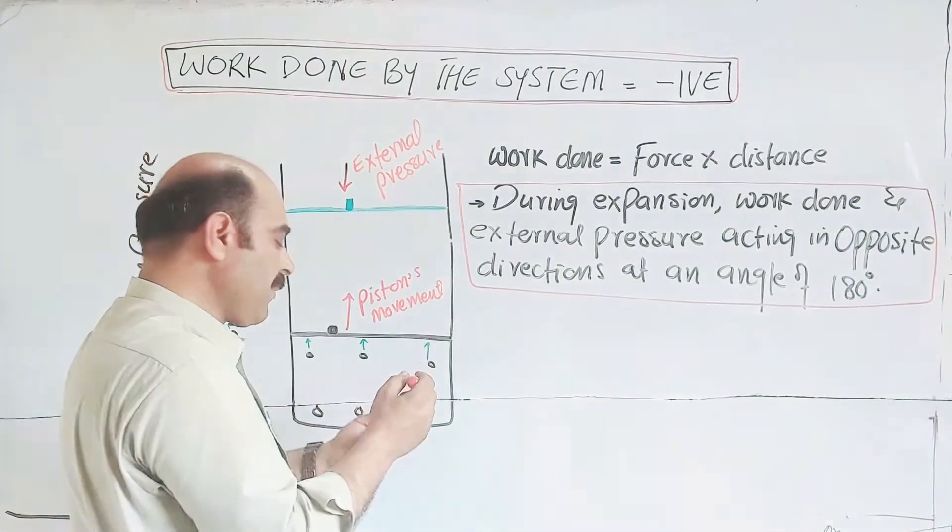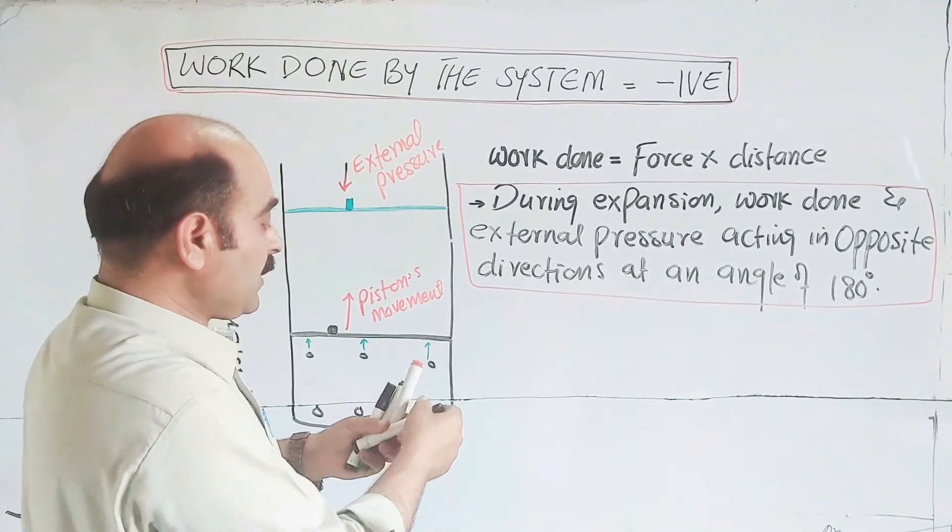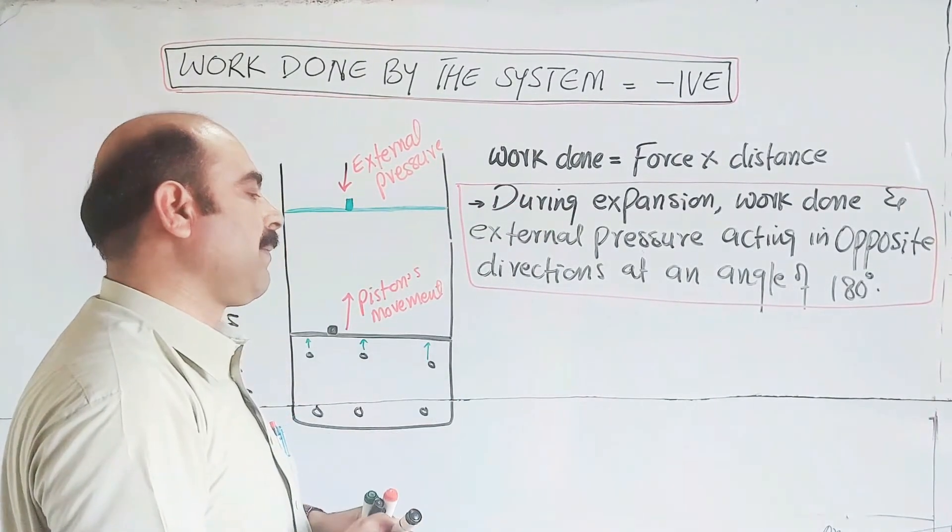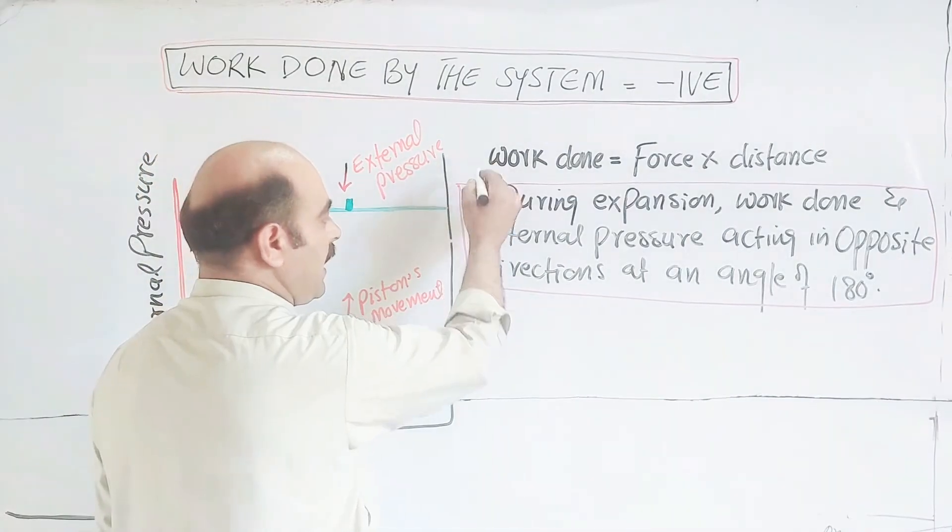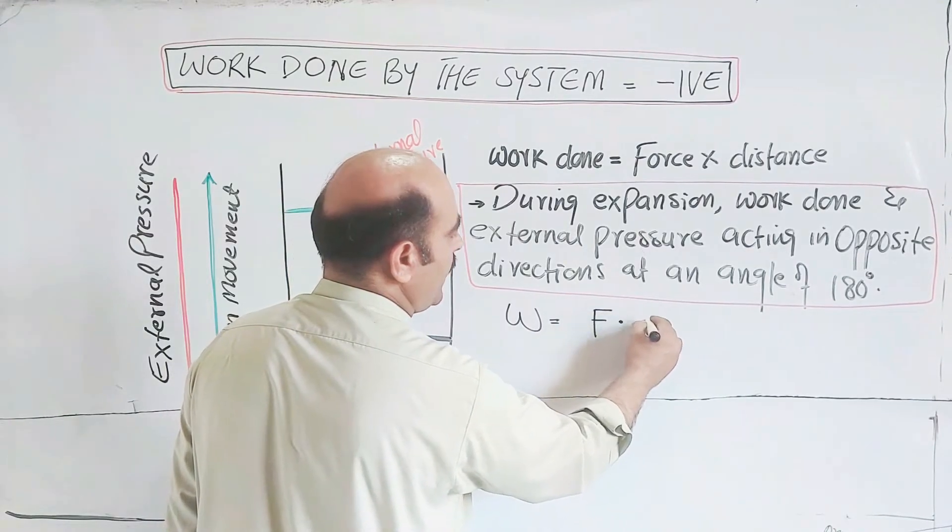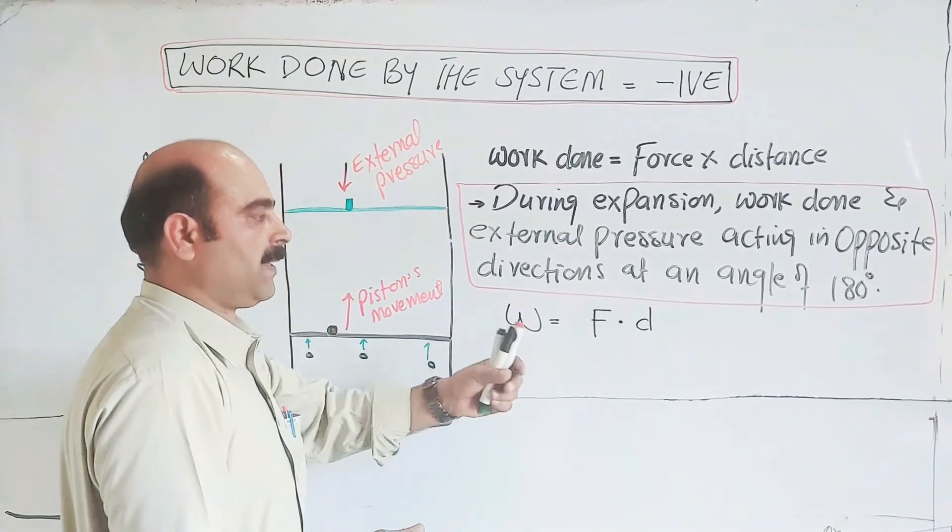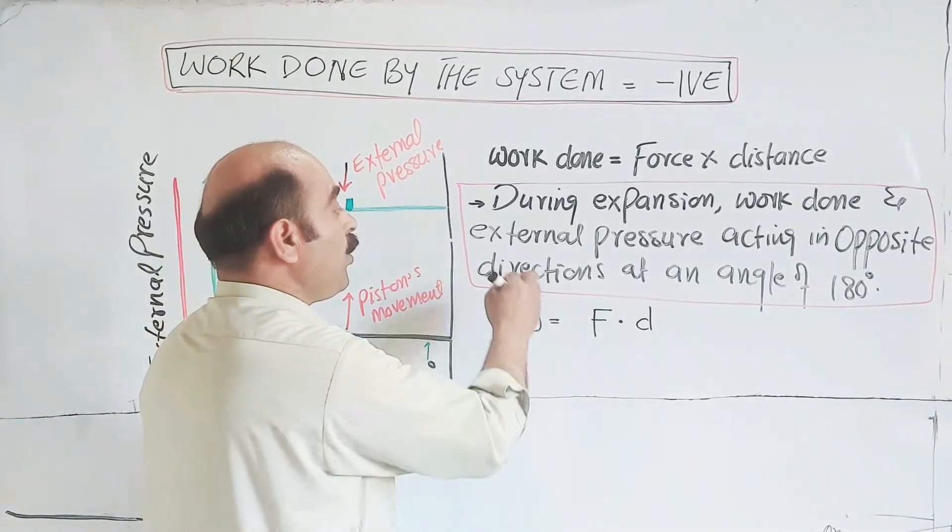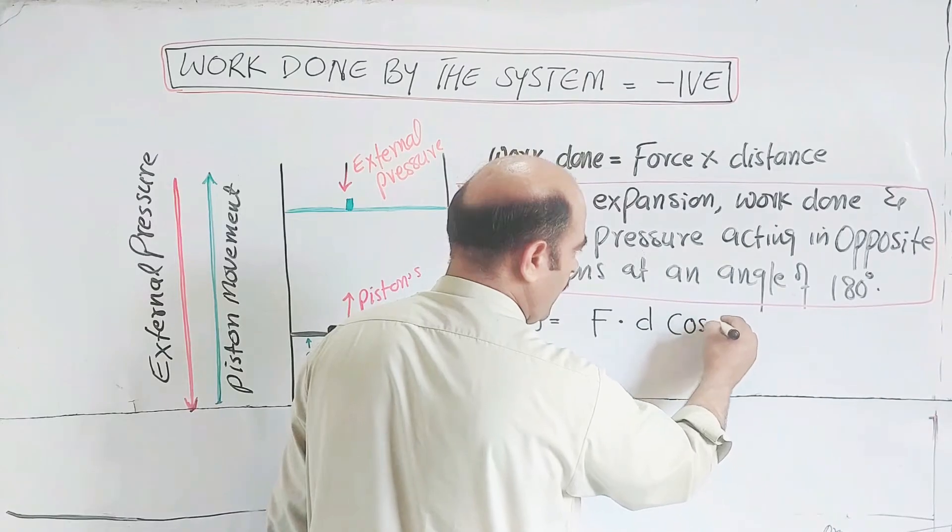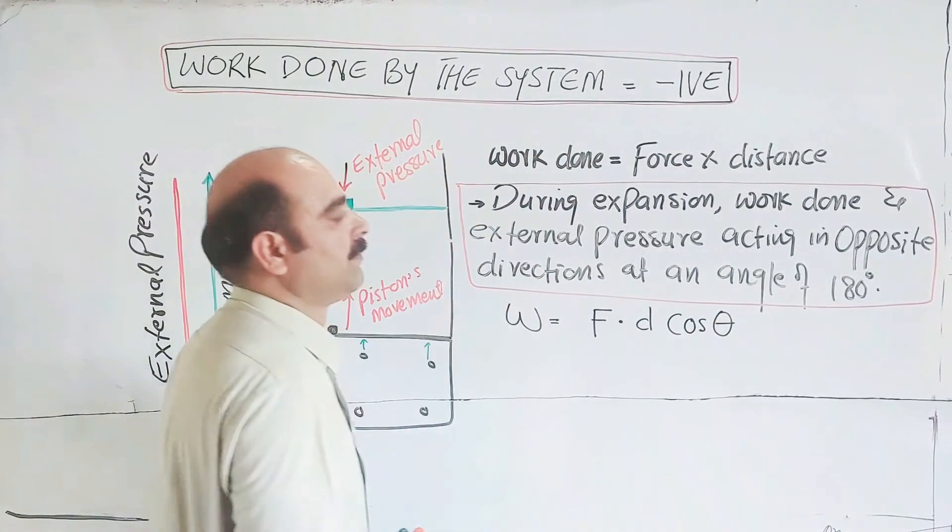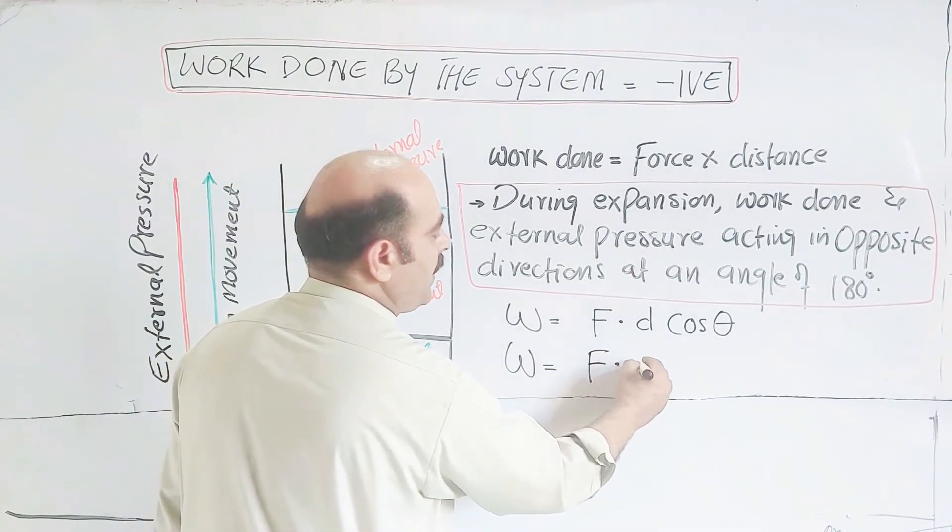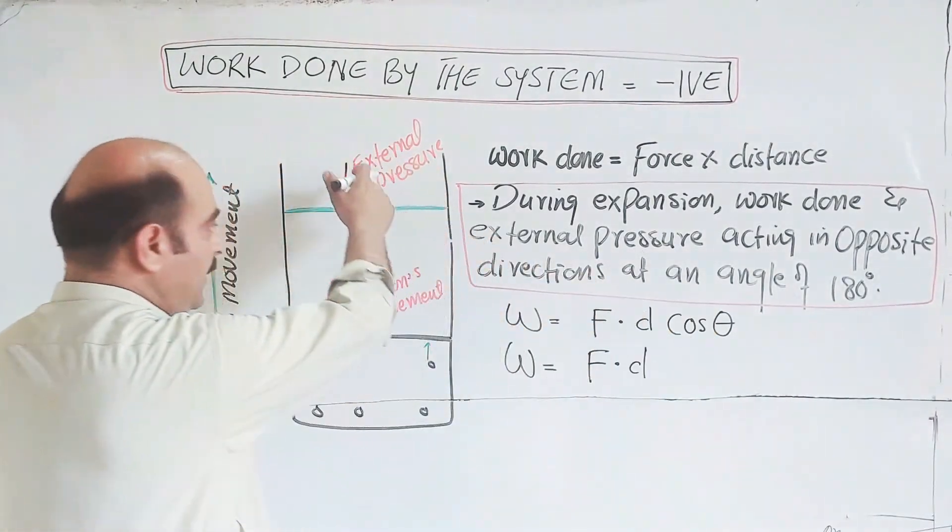In this equation, work done is force multiplied by distance. W is equal to force multiplied by distance, but if there is a cosine theta angle. W is equal to F times D times cos theta.